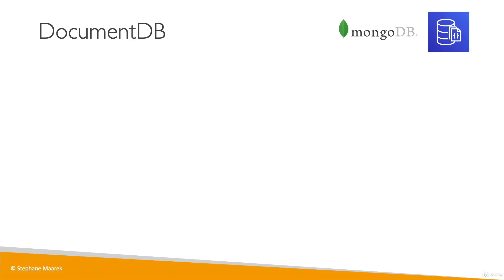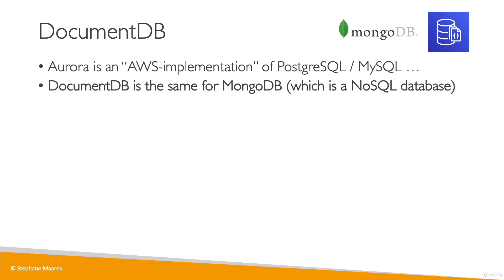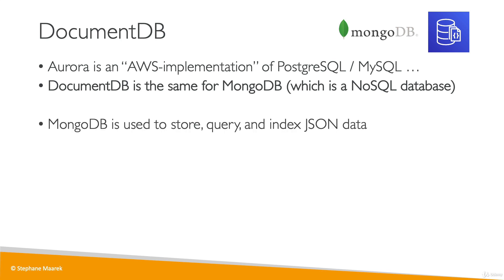Now let's talk about DocumentDB. The same way we had Aurora as AWS's cloud-native version of PostgreSQL and MySQL, we have DocumentDB, which is an Aurora version for MongoDB. MongoDB — that's the logo on the top right corner of your screen — is a NoSQL database, and you need to remember this for the exam. DocumentDB is a NoSQL database and it's based on top of the MongoDB technology, so it's compatible with MongoDB.